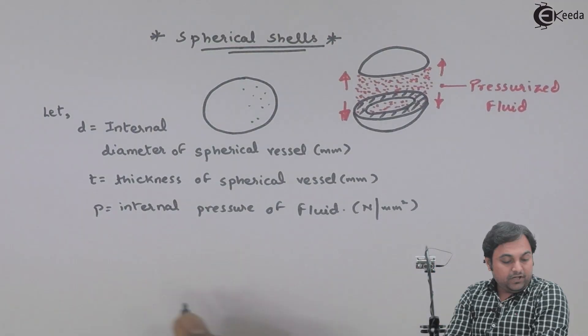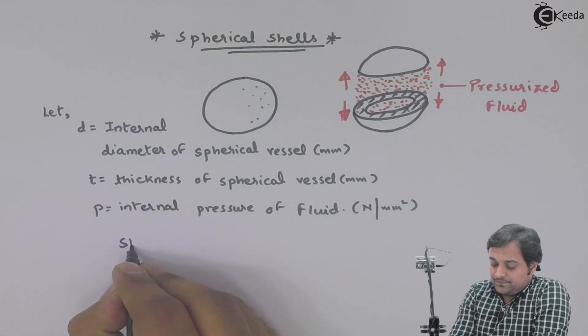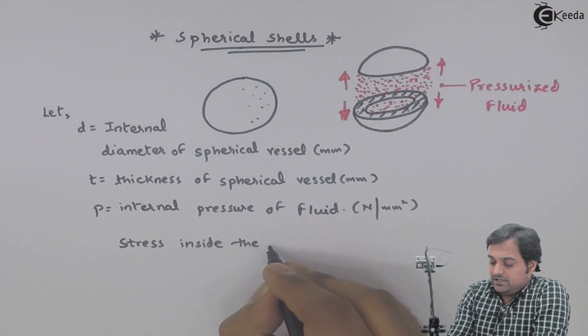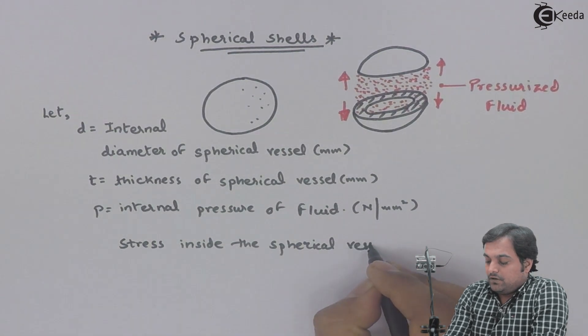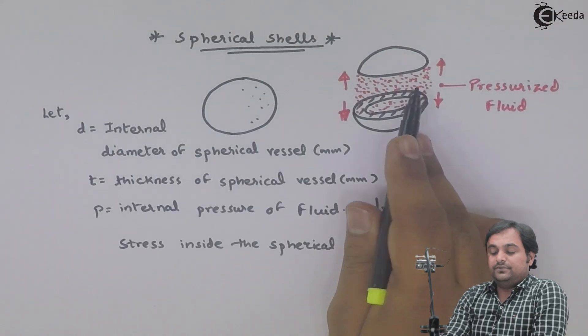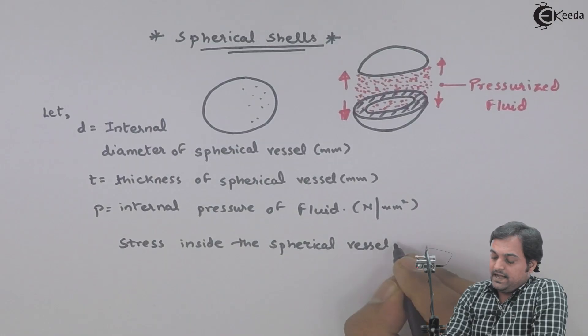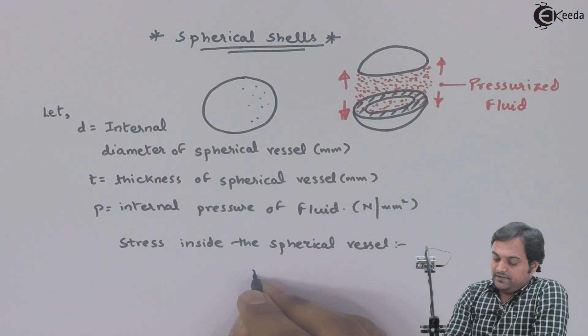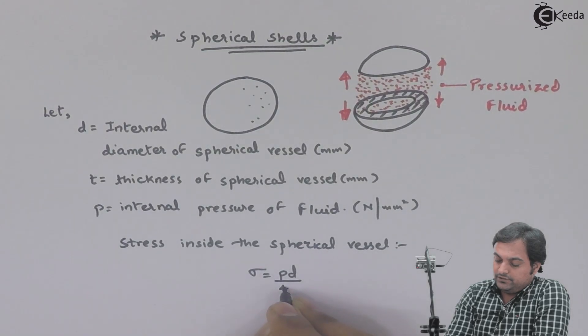From this we can calculate the stress inside the spherical vessel. Because of the internal pressure developed, there is internal stress in the material of this spherical vessel, and that is given by sigma equals PD upon 4T.